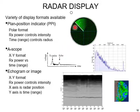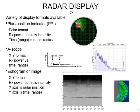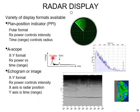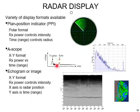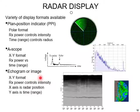We have different types of display. The plan position indicator is in polar format — receiver power controls intensity and time controls the radius. This line moves around and produces spots where targets are present. We also have A-scope display in XY format: received power versus time, where time is calibrated in terms of distance. The transmitted pulse and echo pulse are shown, and by measuring the time gap, we can determine the distance. Another display type is the echogram, which sometimes also produces images — received power controls intensity, X axis is radar position, and Y axis is time or range.